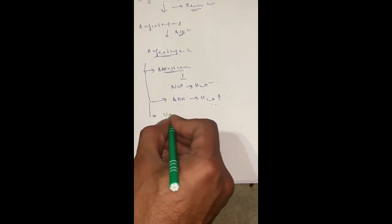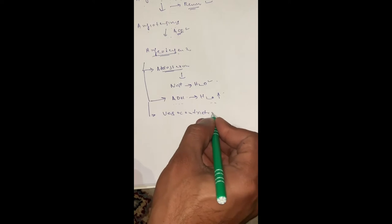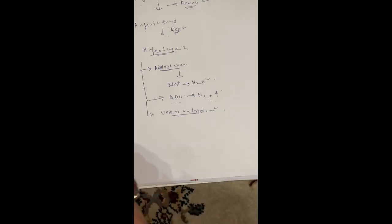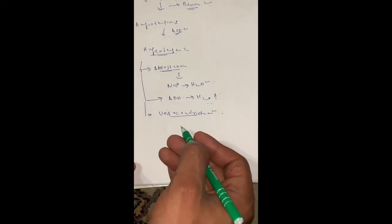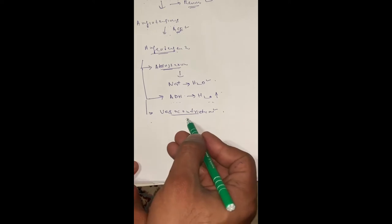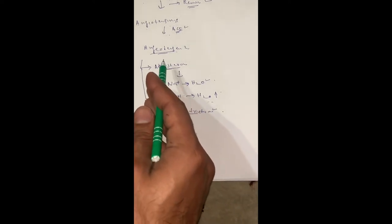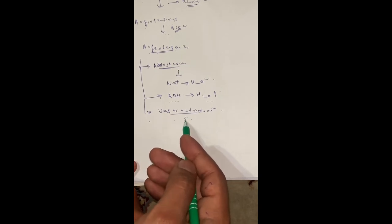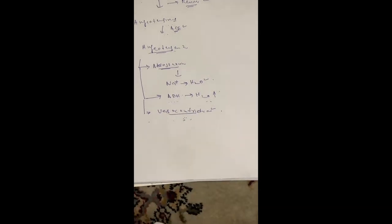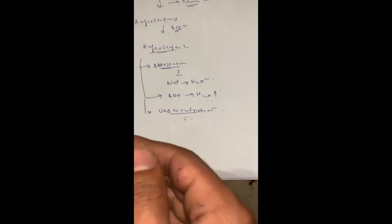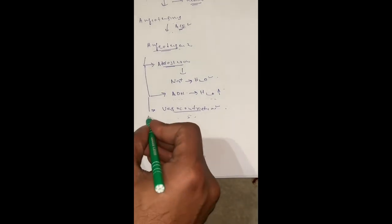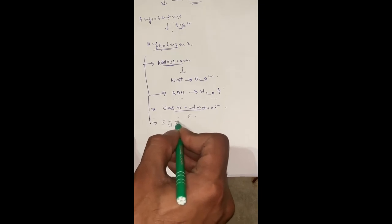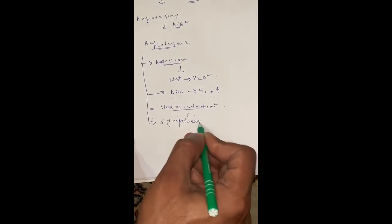It also causes vasoconstriction. When vasoconstriction occurs, it causes an increase in resistance — specifically, an increase in total peripheral resistance. Since total peripheral resistance is directly proportional to blood pressure, the blood pressure will return to normal. It also causes increased sympathetic activity, which further supports this normalization.